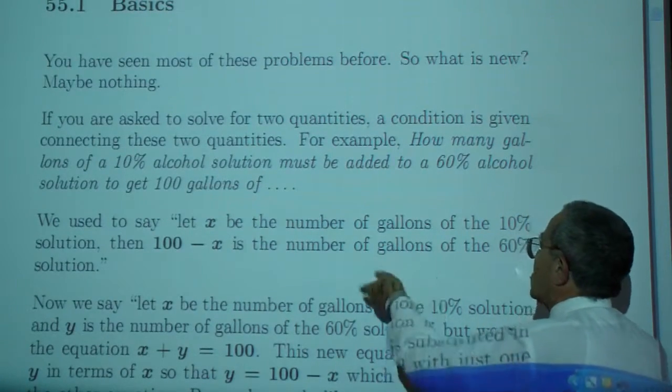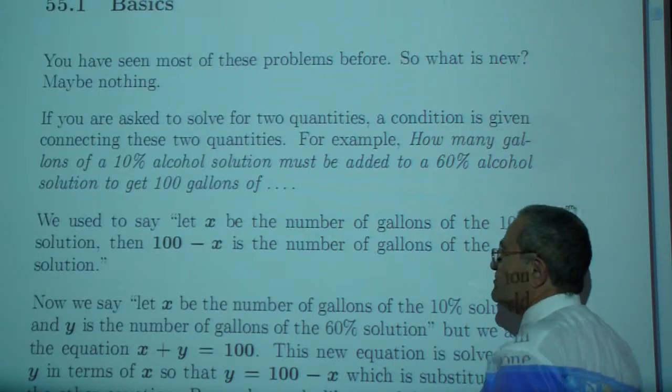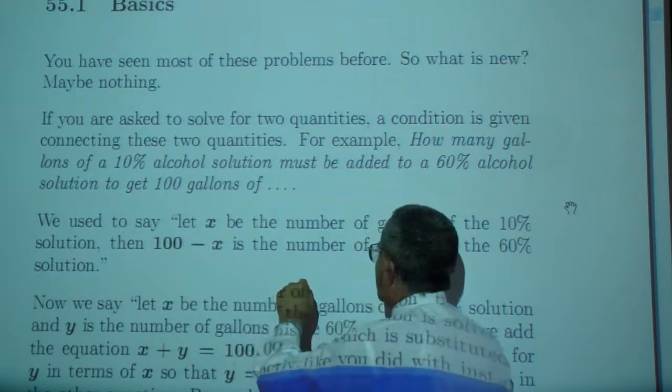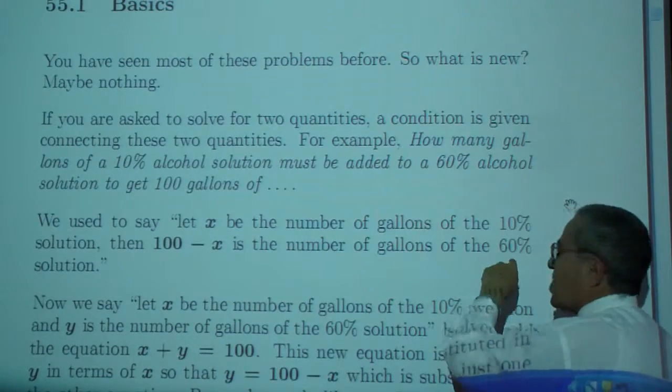We used to say let x be the number of gallons of the 10% solution, and then since the total is 100, 100 minus x is the number of gallons of the 60%.